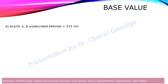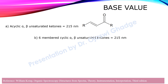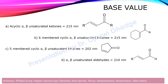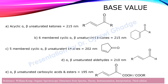These are the base values for acyclic alpha-beta unsaturated ketones, that is 215 nanometers. The second form, six-membered cyclic ketones, also has a base value of 215 nanometers. The third kind, five-membered cyclic ketones, has a base value of 202 nanometers. The fourth type, aldehydes, has a base value of 210 nanometers. The last type, acids and esters, has the minimum base value of 195 nanometers.